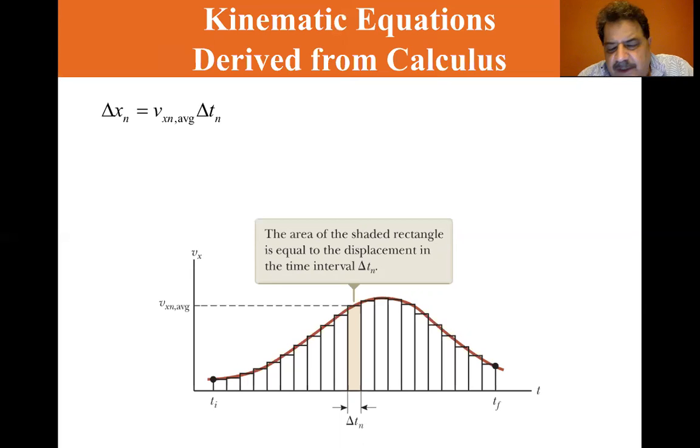The total displacement from t_i to t_f equals the sum of the areas of all the rectangles. It's the sum of all those Vx_n averages times delta t_n. Sigma signifies sum over all values of n.